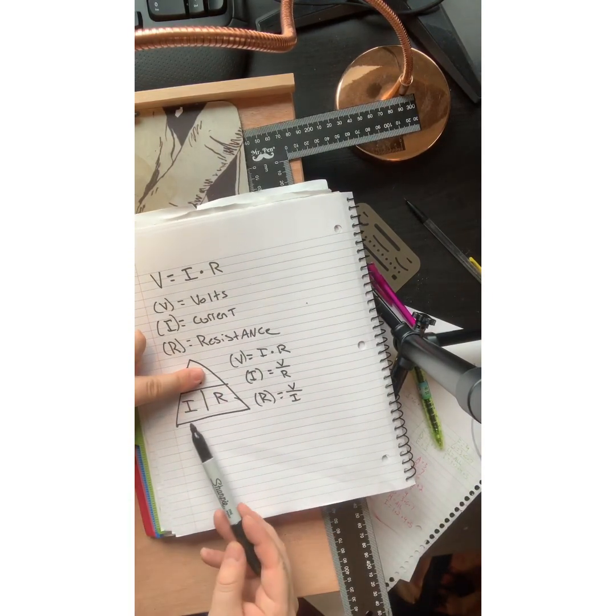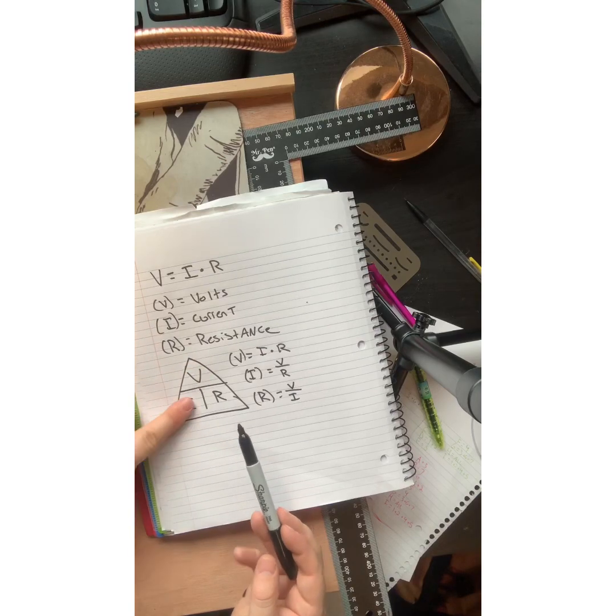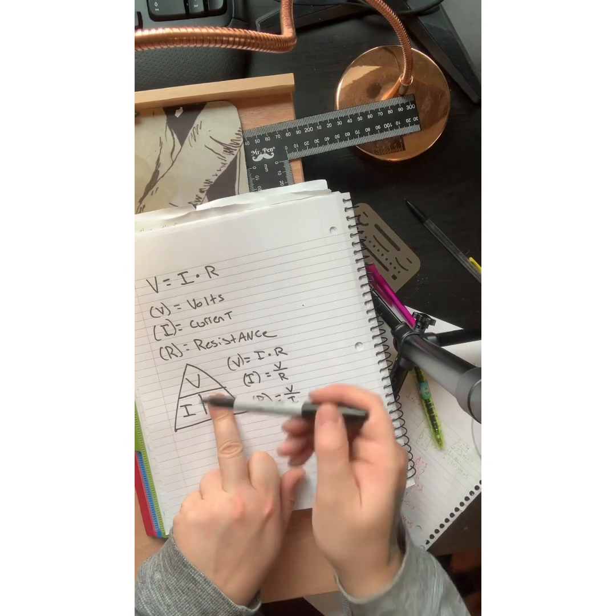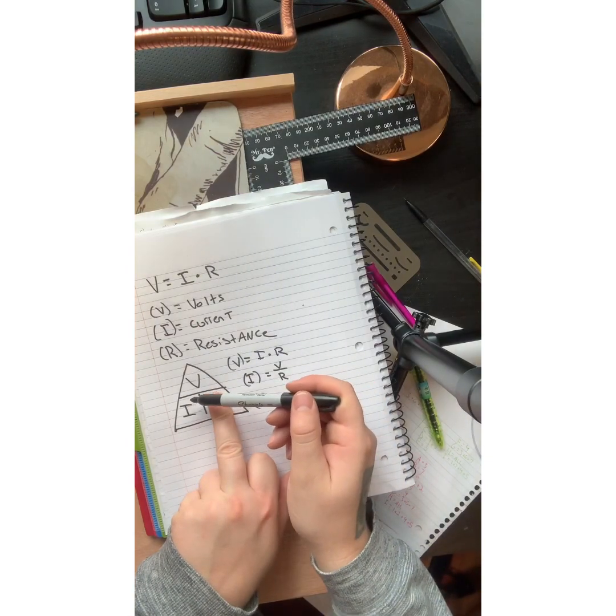So again, cover the V, you get I times R, cover current, you get voltage times resistance, and cover the R and you get voltage divided by your current.